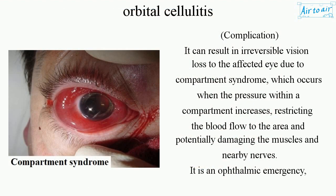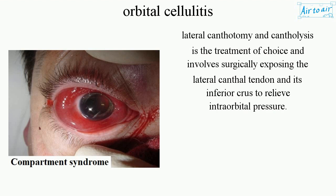Complication: It can result in irreversible vision loss to the affected eye due to compartment syndrome, which occurs when pressure within a compartment increases, restricting blood flow and potentially damaging muscles and nearby nerves. It is an ophthalmic emergency. Lateral canthotomy and cantholysis is the treatment of choice, involving surgically exposing the lateral canthal tendon and its inferior crus to relieve intraorbital pressure.